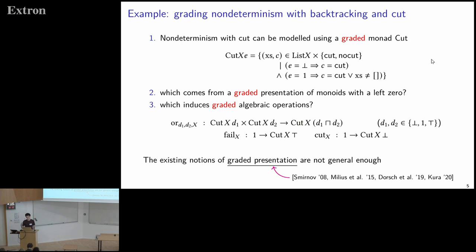Now we want a similar story to presentations and algebraic operations in the graded case. Graded monads used to model effects often have a graded presentation, and these should give algebraic operations to interpret the constructs causing effects. For the non-determinism example, we want to present this graded monad and get graded algebraic operations for or, fail, and cut. However, the existing notion of graded presentation doesn't allow examples like this.